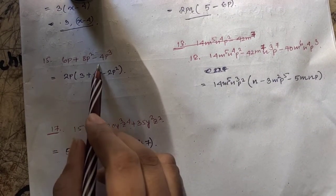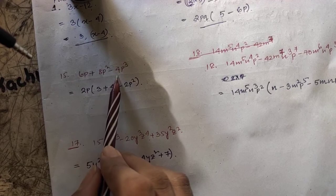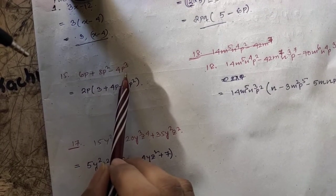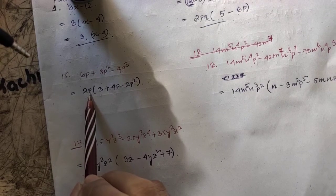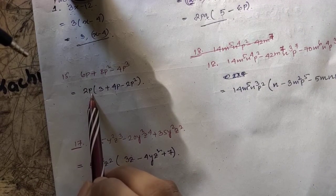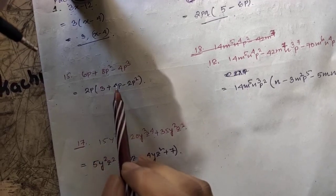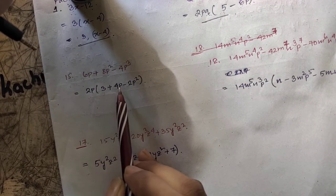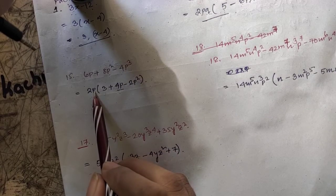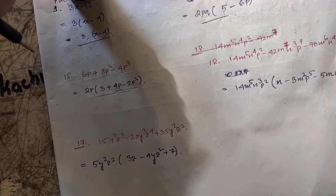Next: 6p + 8p² + 4p³. The numerical values are 6, 8, 4 — all have 2 as a common factor. The variable part has p, p², p³ — take the least power, p, as common. So we take 2p as common. This gives 2p(3 + 4p + 2p²). This is one factor of the algebraic expression.